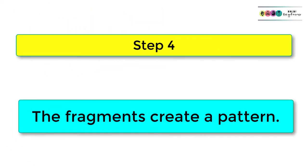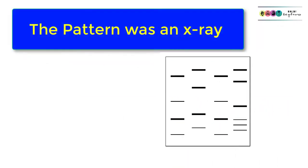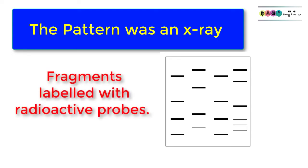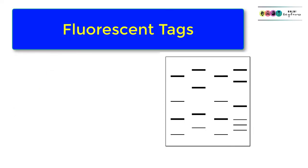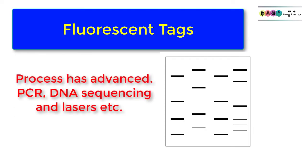The final step is step four, where the fragments are used to create a unique pattern which can then be analyzed or compared with another. Originally when DNA profiling first came out, the pattern was an x-ray because the fragments were labeled with radioactive probes. Things have moved on greatly now and there are fluorescent tags and the whole process has changed, there's new techniques involved.